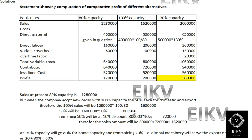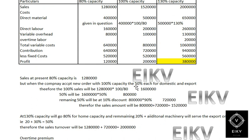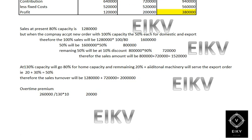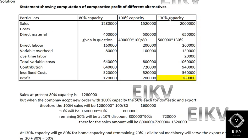When we add both amounts, $8,00,000 plus $7,20,000, we get $15,20,000. For the 130% capacity column, we have $12,80,000 for the domestic (80% capacity) plus $7,20,000 already computed for the export order, giving total sales of $20,00,000.